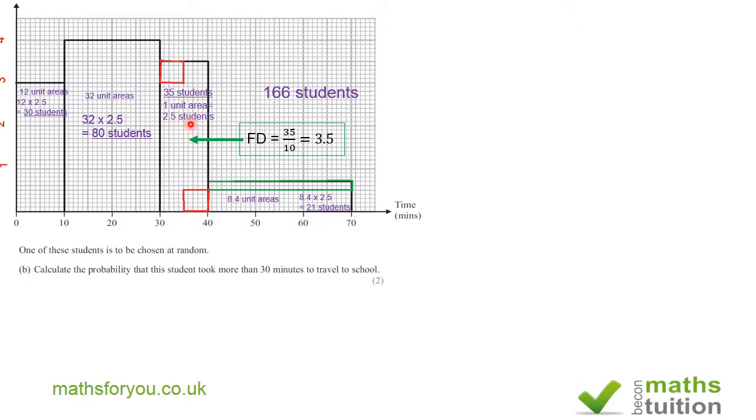And if we add 35 plus 80 plus 21 we get 136. So 136 divided by 166 we get 0.337 and that's the probability that a student picked at random will travel to school between 30 and 70 minutes.